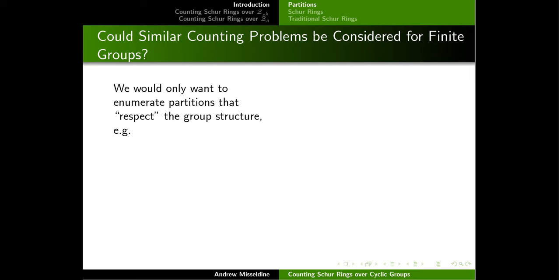There is a notion of a group partition — the partition object in the category of groups — which involves covering a group using subgroups that intersect in trivial ways. This seems like a strong candidate for what we want, but group partitions are actually a very rare phenomenon. You can do it with Frobenius groups and others, but it doesn't happen that often. For example, a cyclic group cannot be covered using proper subgroups, so that type of partition where cells themselves are subgroups requires a different approach.